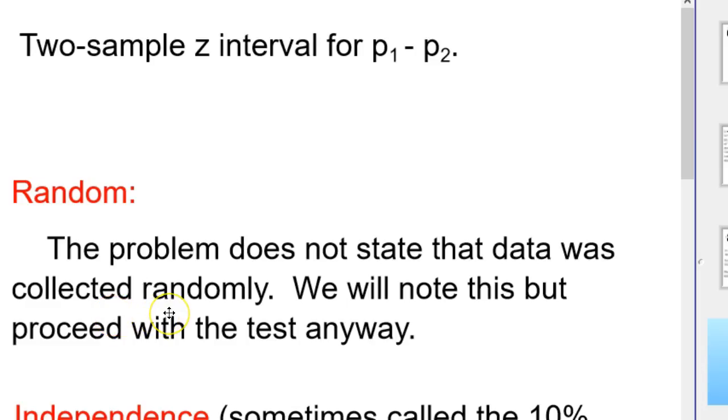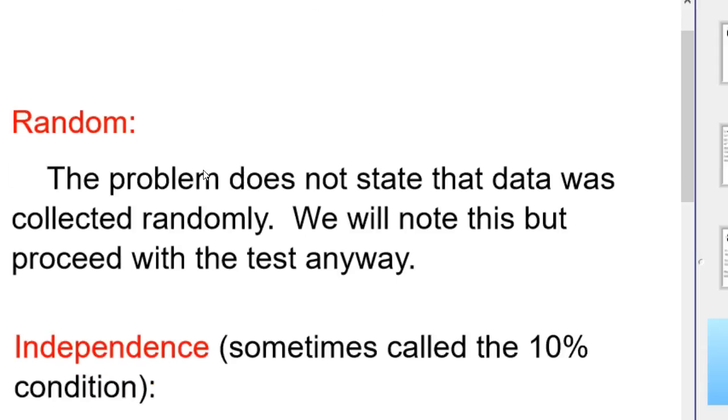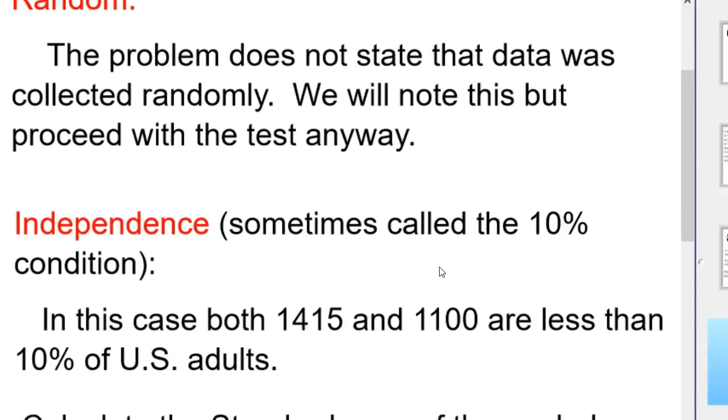So the next step is we need to come up with the conditions. Make sure that it passes all the conditions. First off, for randomness, the problem does not state that data was collected randomly. We will note this but we're going to proceed with the test anyway. It would be good maybe you might have to contact the people who collected the data for you and make sure that they randomly selected, maybe a simple random sample, whatever. But here we'll go ahead and keep going.